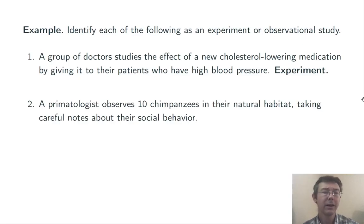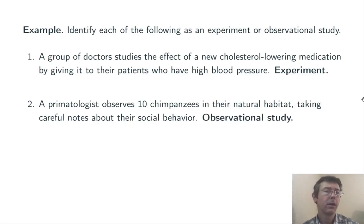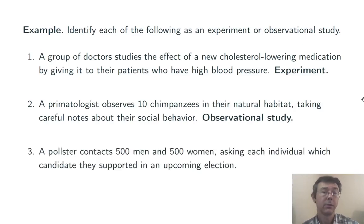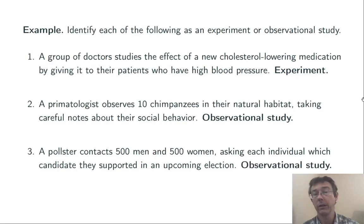Two: a primatologist observes 10 chimpanzees in their natural habitat, taking careful notes about their social behavior. This is an observational study — the primatologist isn't attempting to affect that behavior, just taking observations of it. Three: a pollster contacts 500 men and 500 women, asking each individual which candidate they support in an upcoming election. This is another observational study — hopefully the pollster isn't attempting to influence the outcomes of the questions they're asking.